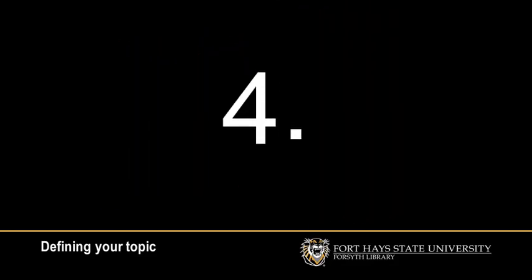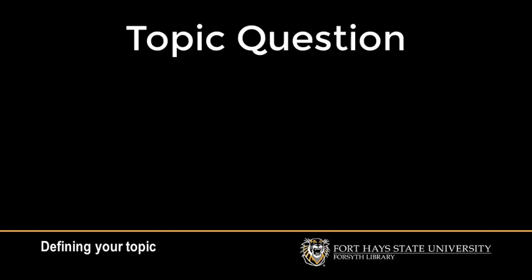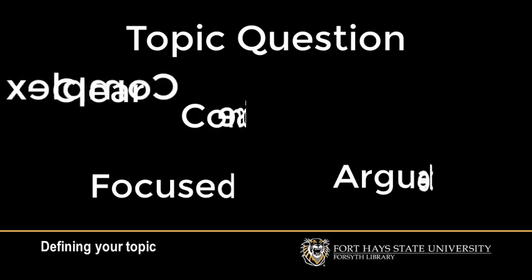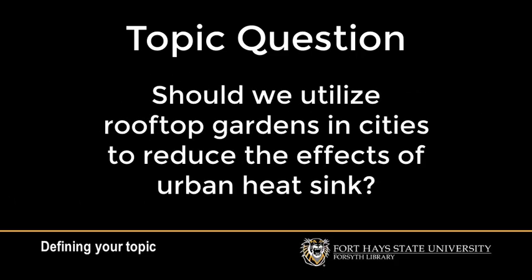Now that you have done some general mind mapping, you probably have a decent idea of what questions you want to answer. When you write out your topic sentence, there are a couple of rules of thumb that are helpful to keep in mind. A good topic question is clear, focused, concise, complex, and arguable. For example, the topic question 'Should we utilize rooftop gardens in cities to reduce the effects of urban heat sink?' is clear, focused on a specific practice of putting gardens on rooftops, concise but provides complexity in the social and financial implications, and you can argue for or against making rooftop gardens in cities the norm.